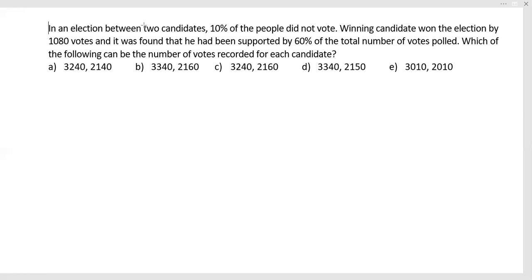In an election between two candidates, 10% of the people did not vote. The winning candidate won the election by 1080 votes and it was found that he had been supported by 60% of the total number of votes polled.